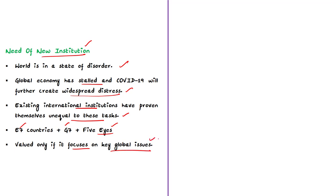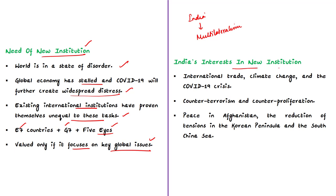In this context, the author proposes a new mechanism comprising members of G7, E7, and Five Eyes countries. India has also released its NORMS framework — New Orientation for a Reformed Multilateral System. India's priorities in such a new mechanism include: first, international trade, climate change, and the COVID-19 crisis; second, counter-terrorism and counter-proliferation. On regional issues, India should ensure Iran does not acquire nuclear weapons, contribute to peace in Afghanistan, the Gulf, and West Asia, and address tensions in the Korean Peninsula and South China Sea.